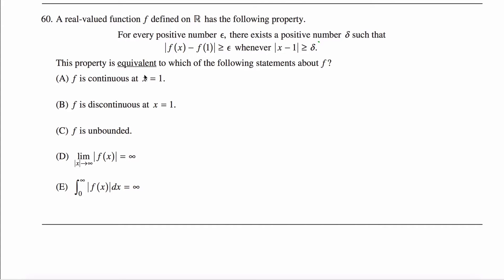For every positive number epsilon, there exists a positive number delta such that the distance between f of x and f of one is greater than or equal to epsilon, whenever the distance between x and one is greater than or equal to delta.